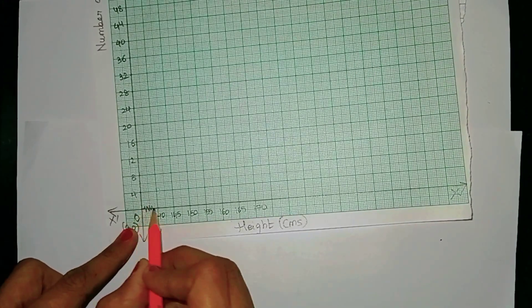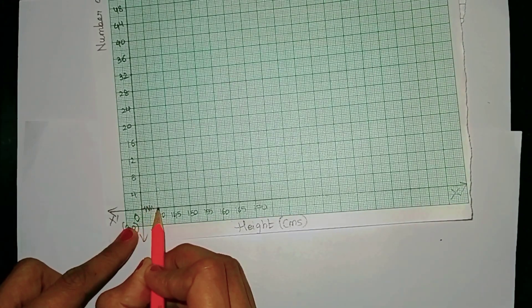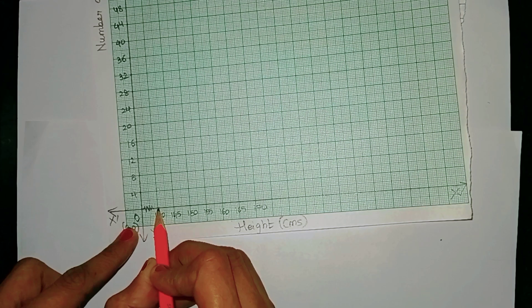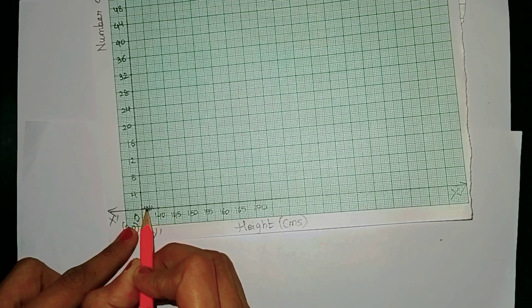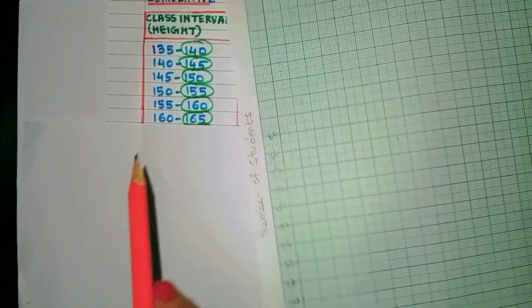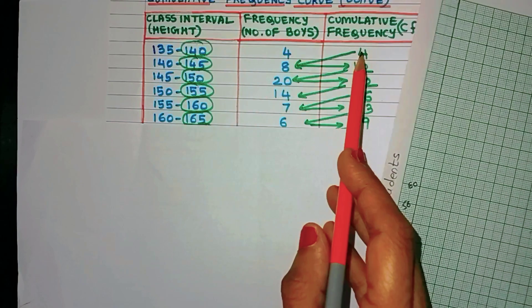Now the scale that we have taken is on the x-axis 1 centimeter as 5 centimeters, and y-axis 1 centimeter as 4 students. Now because this part is uneven, see 0 to 140 and after this it's a gap of 5, that's why we have put a kink over here.